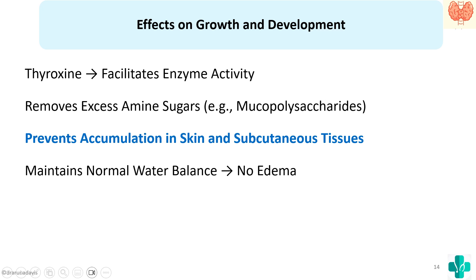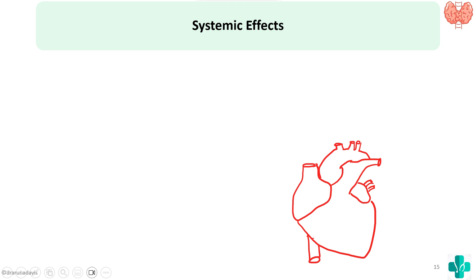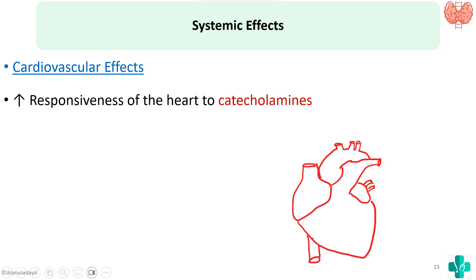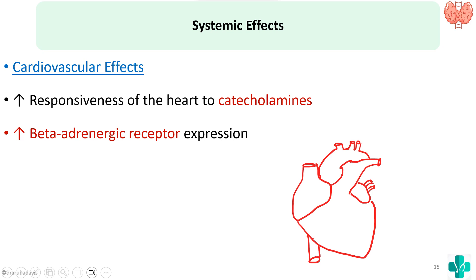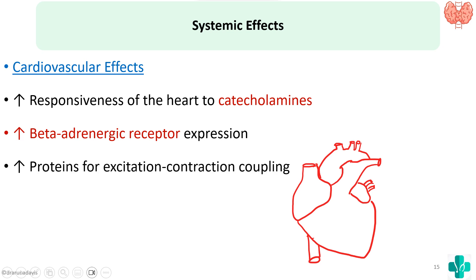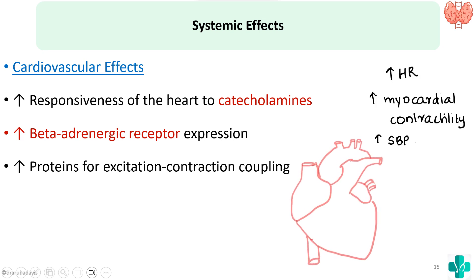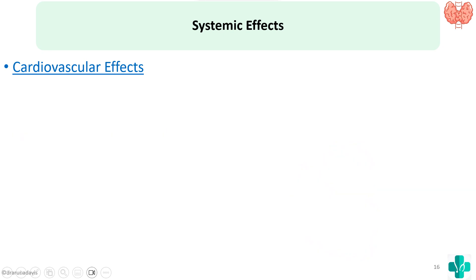Now we move on to the systemic effects, starting with cardiovascular effects. The thyroid hormone can improve the responsiveness of the heart to catecholamines like adrenaline and noradrenaline by increasing beta adrenergic receptor expression, making the heart more sensitive to sympathetic stimulation. It also increases proteins for excitation-contraction coupling. Due to this permissive action on catecholamines, there can be increased heart rate, increased myocardial contractility, and increased systolic blood pressure.